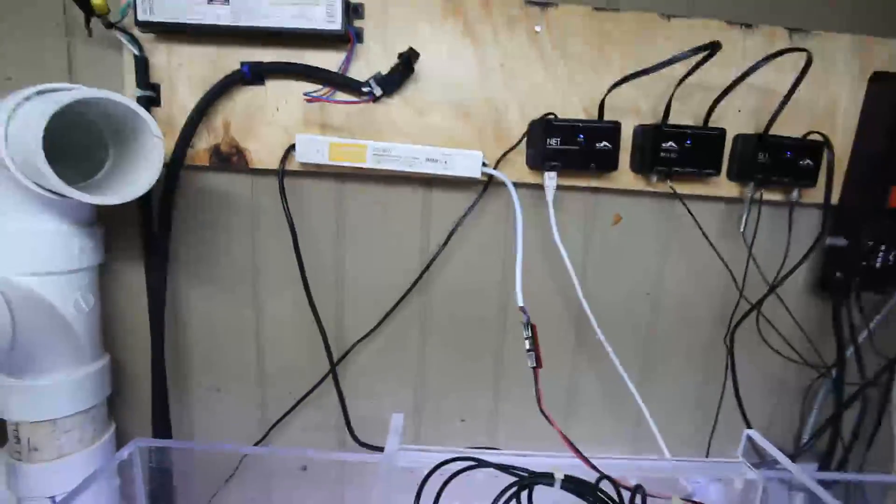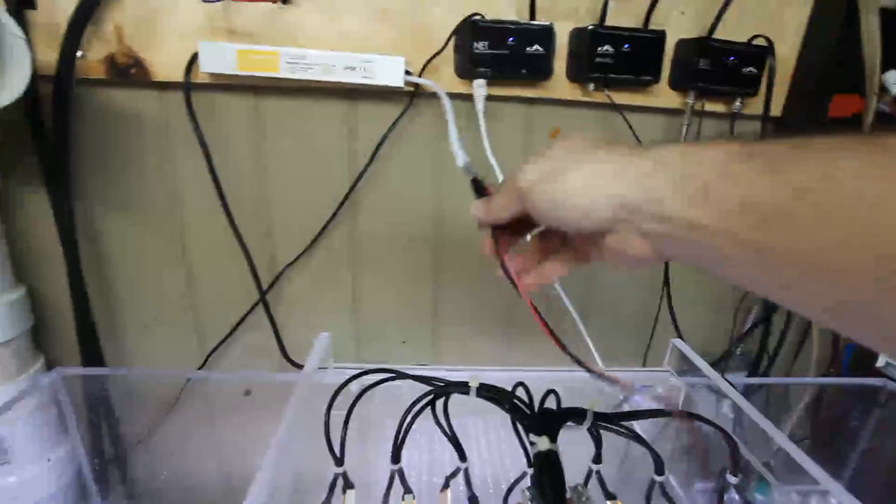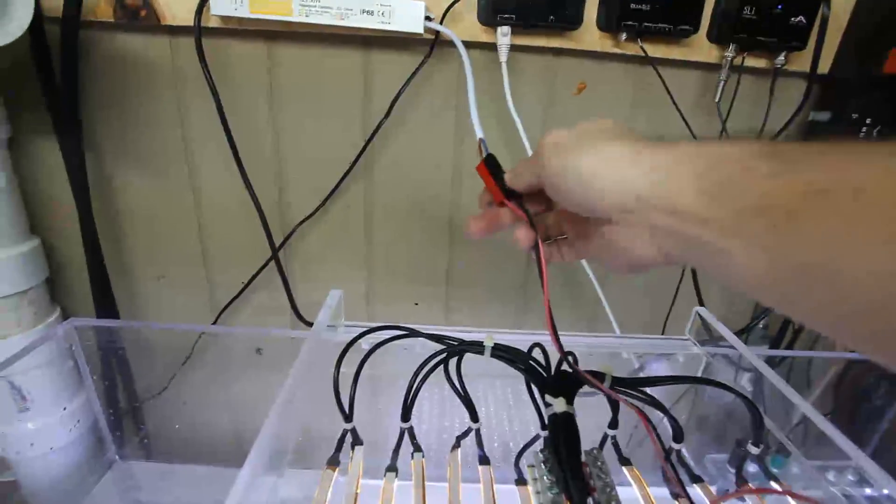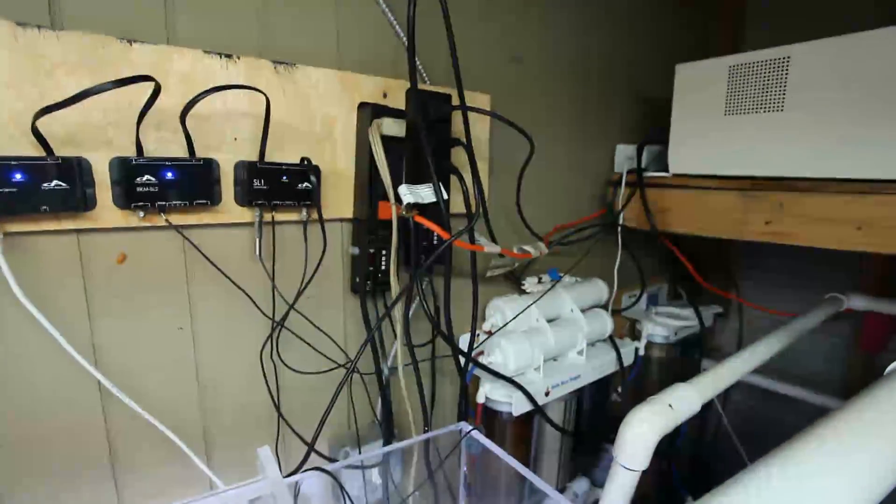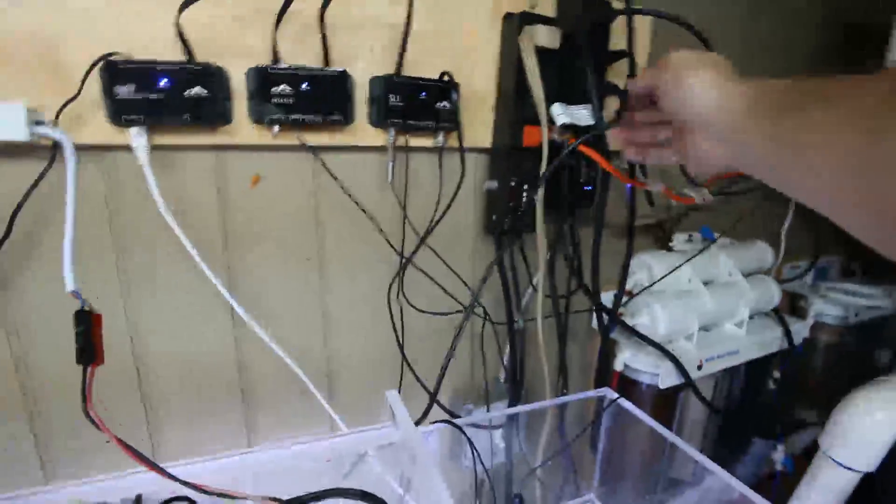As you can see, it works just fine. It is IP68, which means it is waterproof. You can see here that the wire comes in. I've got an Anderson PowerPoll, which makes it easy to disconnect. I also have a drip loop, and then it is plumbed into my Reef Keeper Elite system and controlled there.